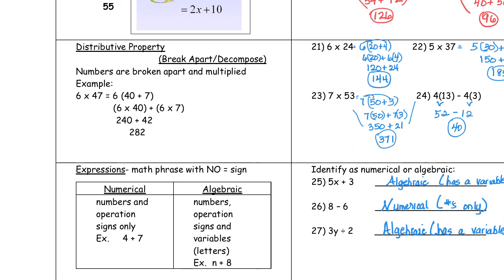With the distributive property, we have the break apart method also. It will tell you exactly what you need to do in order to solve the problem. For the break apart, numbers are broken apart and multiplied. For example, when we have something like 6 times 47, we break apart the 47 as 40 plus 7 — we break it up in the tens to make it easier. And then we have 6 times 40 plus 6 times 7. Then we follow the order of operations, and we wind up with the final answer of 282.